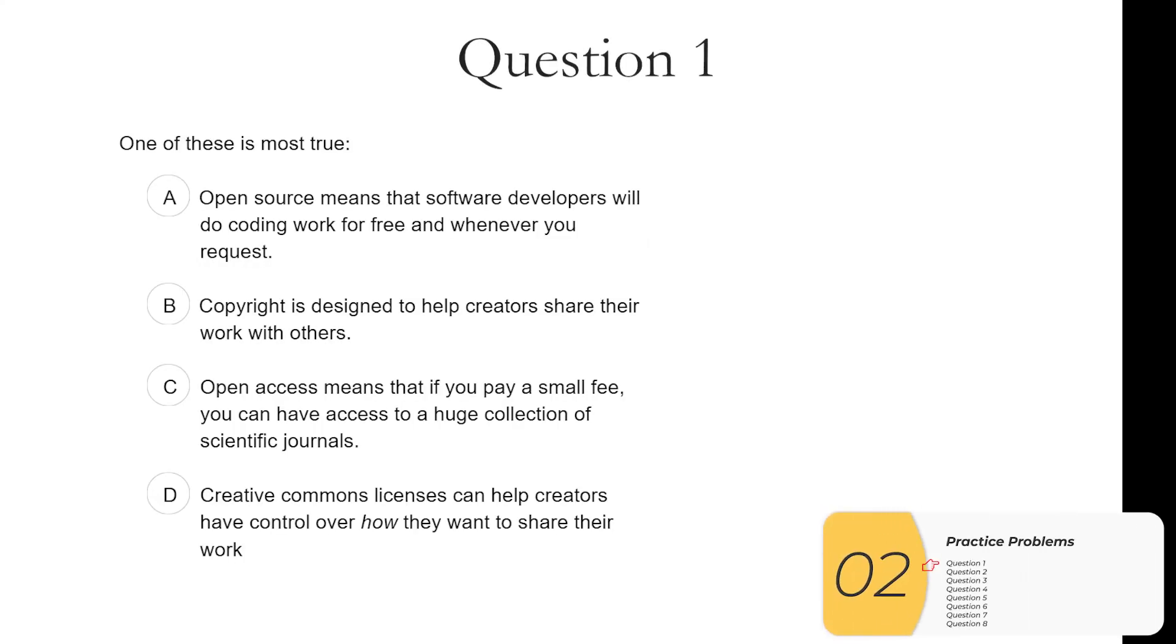All right, here are the practice questions. One of these must be true. A. Open source means that software developers will do coding work for free and whenever you request. This is not true. Open source means that the source code is open for you to see, but that's all. If you can compile that software, then it's free, but the software developers are not there at your beck and call. B. Copyright is designed to help creators share their work with others. No, actually, it's designed to protect their work from others who might profit off their work. So B is not correct.